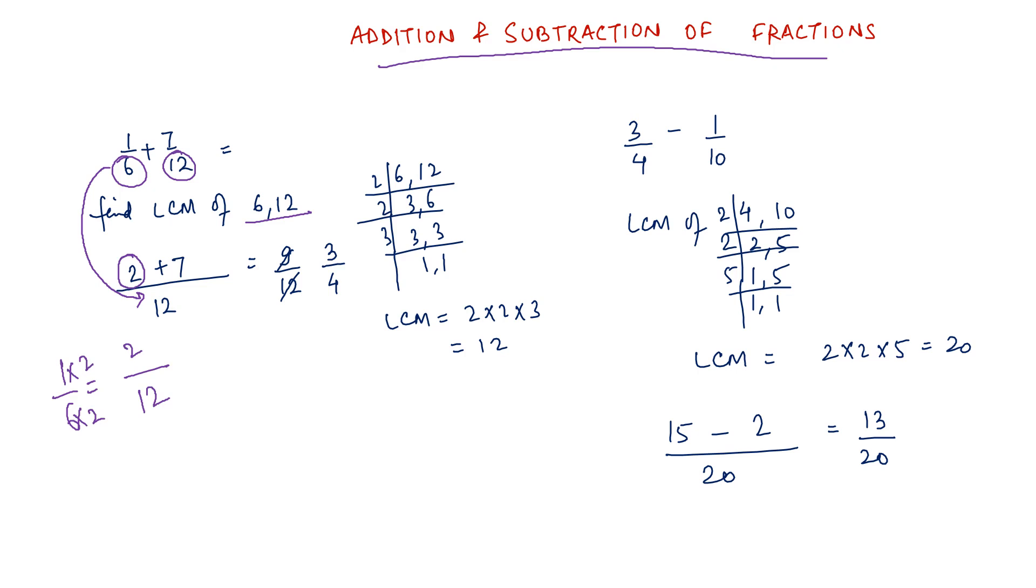Same way, 7 by 12 needs to be changed to a 12 with the denominator. So 12 into 1 is 12. So 7 into 1 is 7. That's how you got a 7. So then it is 9 by 12 which can be further reduced to 3 by 4 by reducing it with the table of 3.